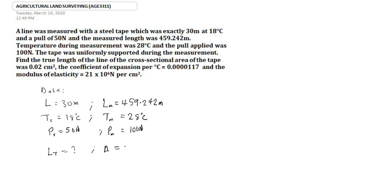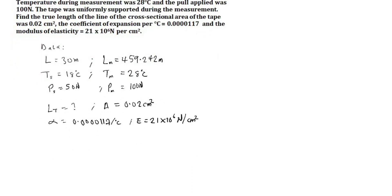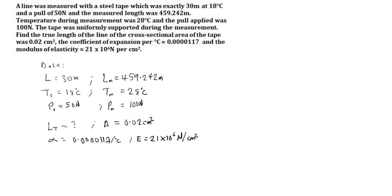The cross-sectional area is given as 0.02 centimeters squared, the coefficient of linear expansion is 0.0000117 per degree centigrade, and the modulus of elasticity (Young's modulus) is 21 × 10⁶ newtons per centimeter squared.